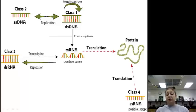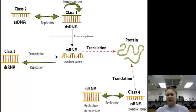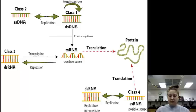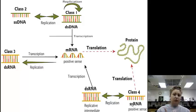Class 4 is single-stranded positive sense. That's the same as mRNA, so it can just go through translation. How does it replicate? It first has to go into double-stranded RNA and then go back to single-stranded positive sense. That double-stranded RNA can also be transcribed to make more positive-sense mRNA, which can then be translated into proteins. So this Class 4 genome can do a lot of things.